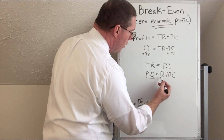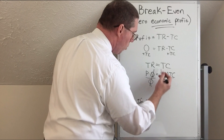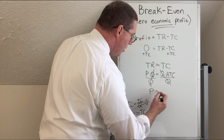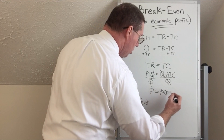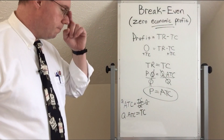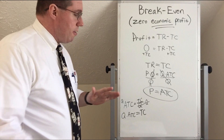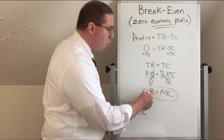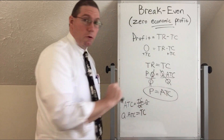If we divide both sides by quantity, we can cancel quantity, and we now have a situation where price is equal to average total cost. This is important. A firm will break even when their price is equal to their average total cost.